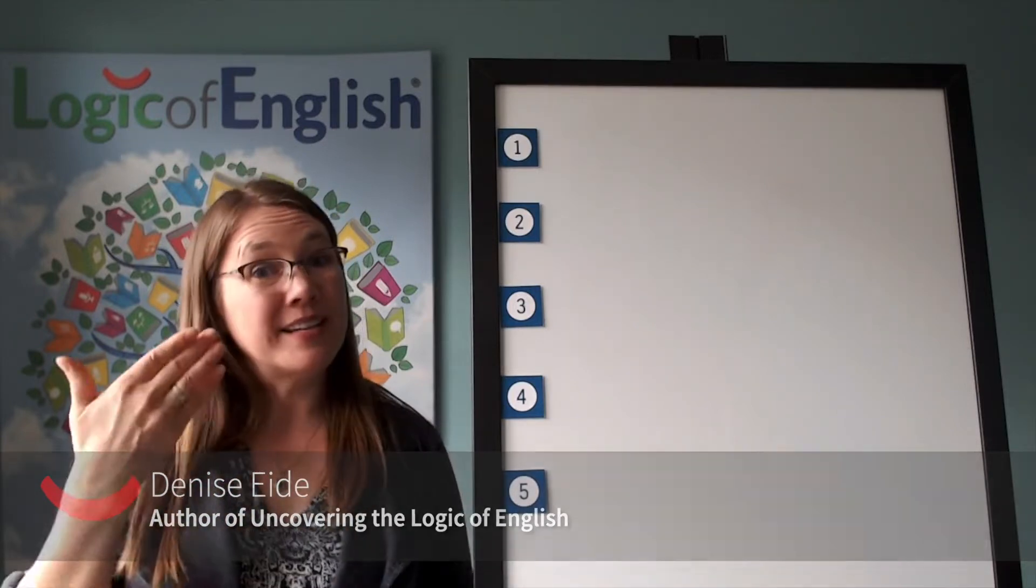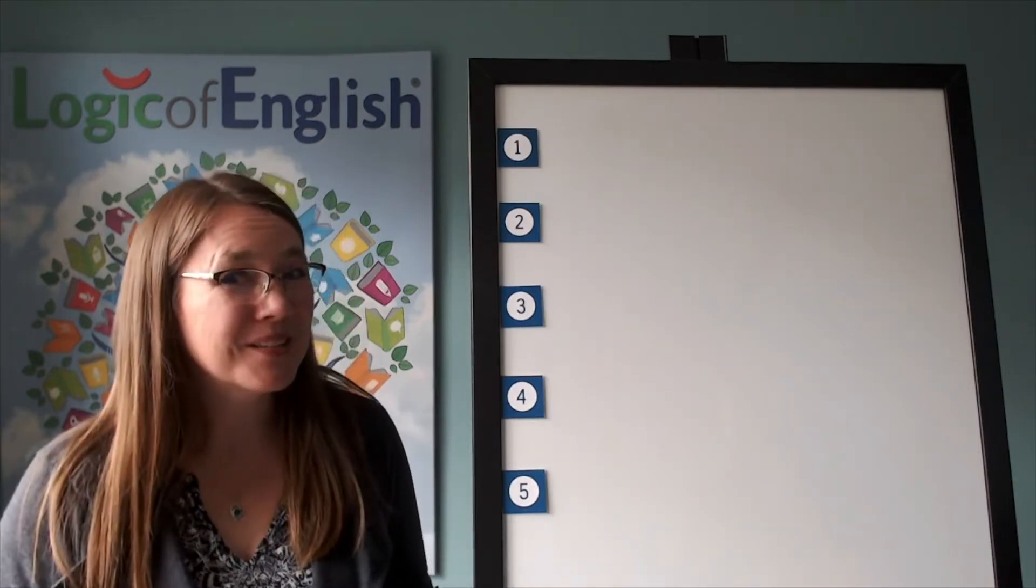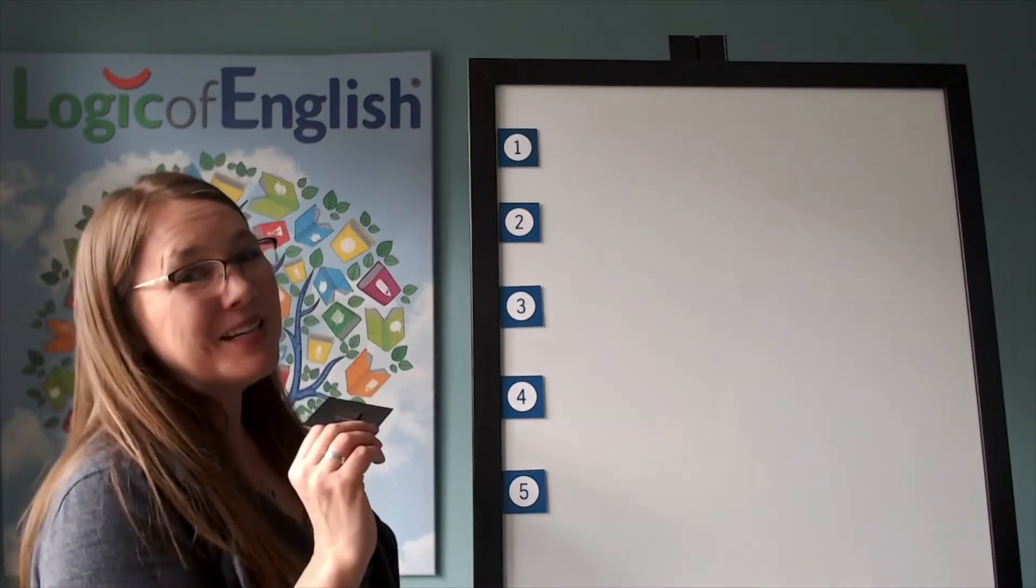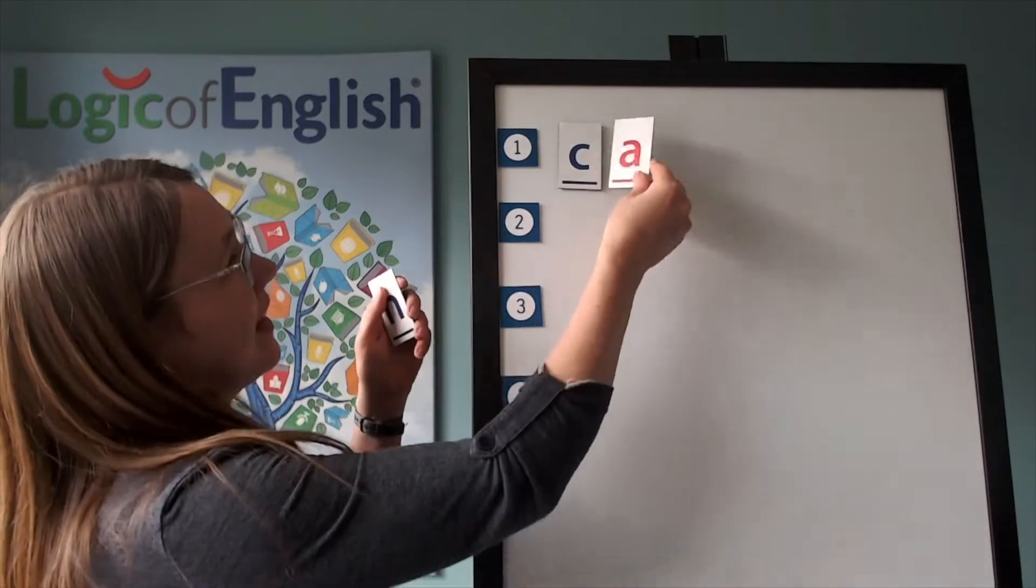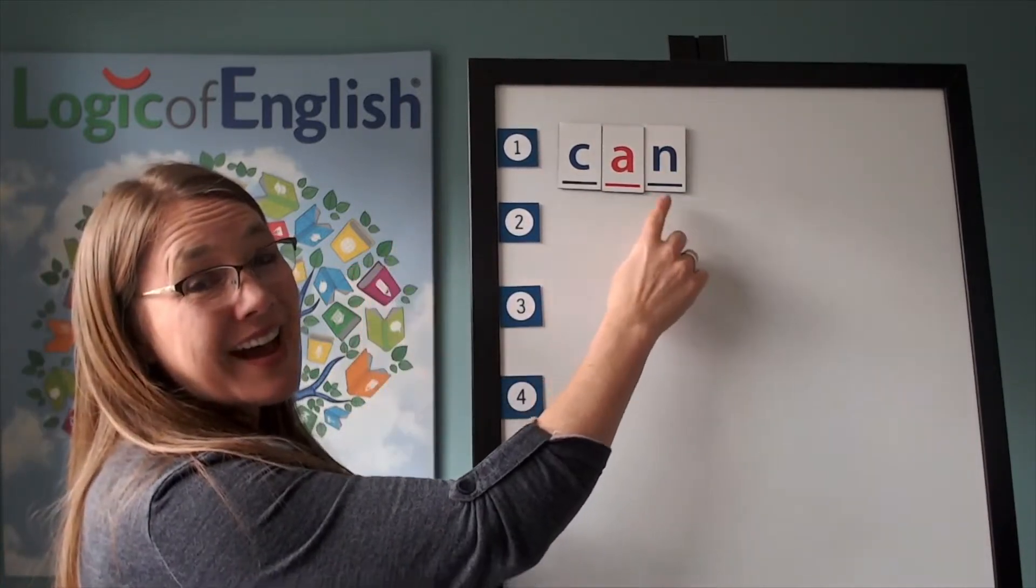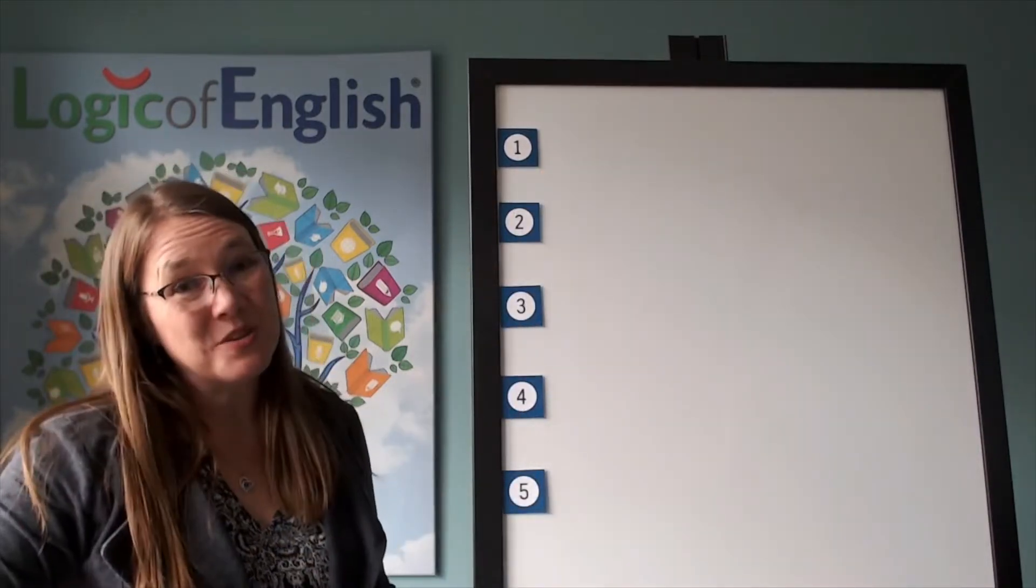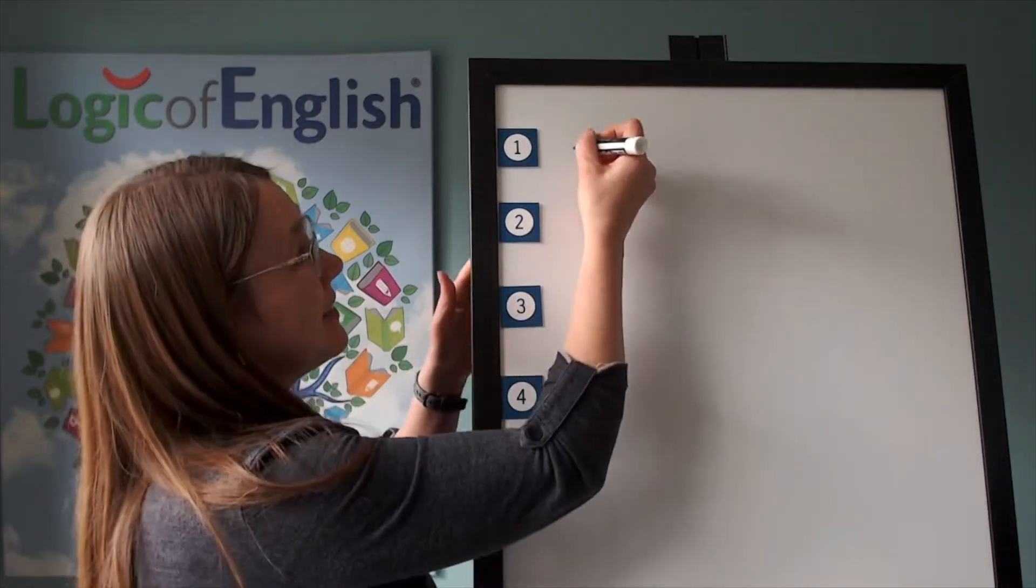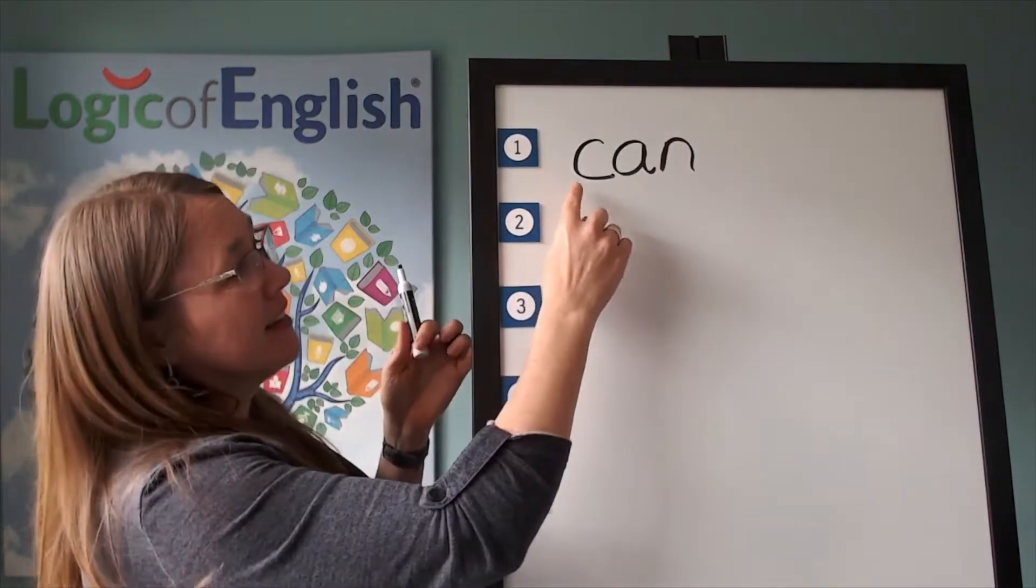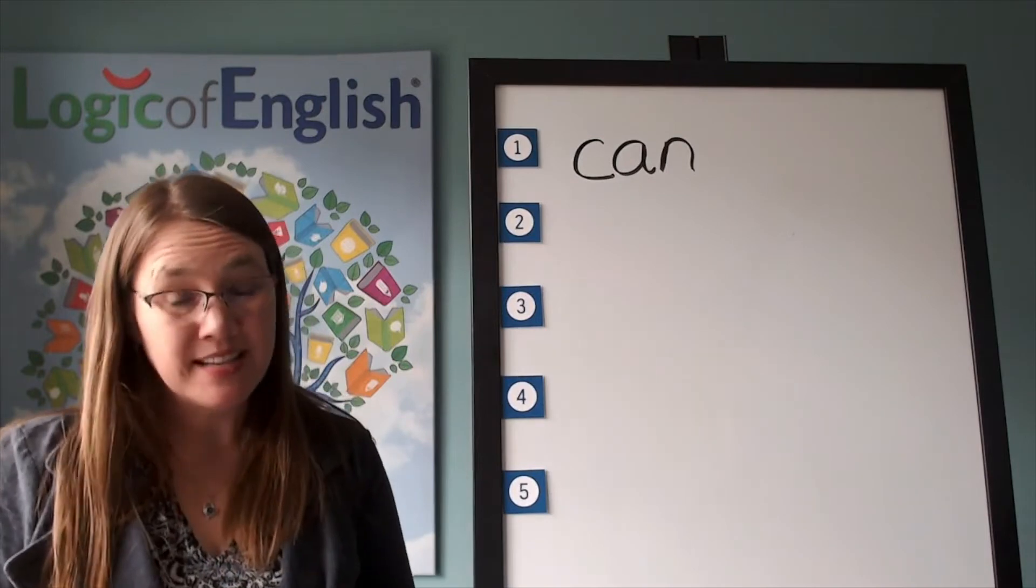Go ahead and write can. Sound it out nice and loud as you write it. Now help me to write it. C-A-N. Let's sound it out. C-A-N. Can. Excellent. I'm going to write it with my marker now. Help me spell it again. C-A-N. And let's read it. C-A-N. Can.